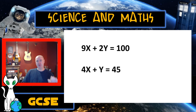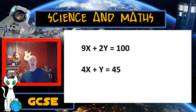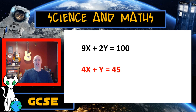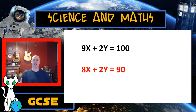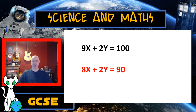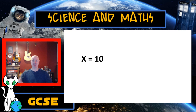The first thing I would have done is look to see if I could make either my x's or my y's the same. I can make the y's the same if I take the bottom equation and times it by two, giving me 8x plus 2y equals 90 — every single thing in that equation has been times by 2. Now I take the simple second step, which is subtracting the bottom equation from the top. 9x minus 8x gives me x; 2y minus 2y gives me no y; and 100 minus 90 gives me 10. Leaving me with x equals 10.